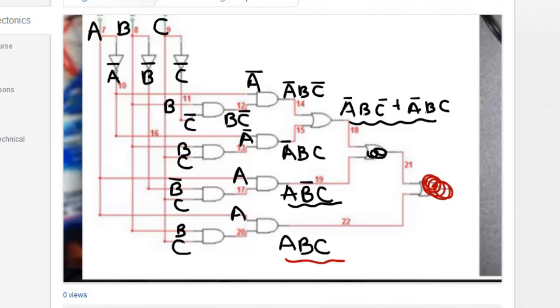That's going to give me a final term of NOT A, B, NOT C, or NOT A, B and C, or A, NOT B, C, or A, B, C. So I hope that helps you.